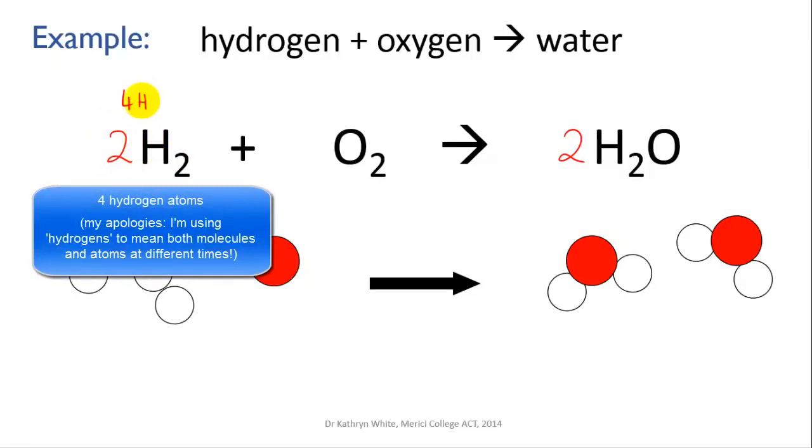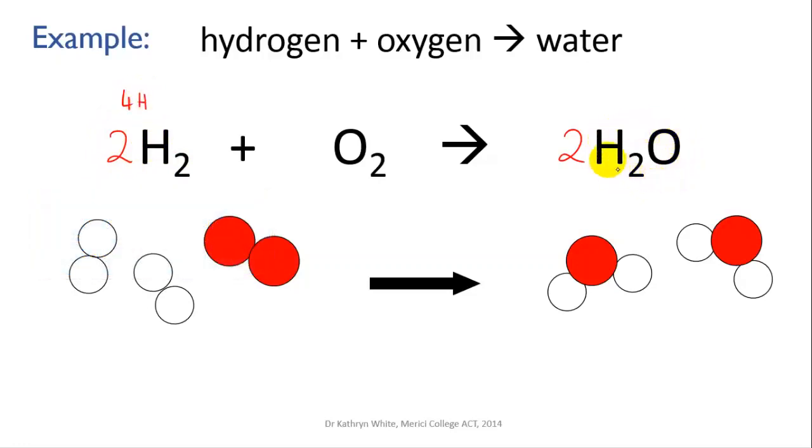And if we go over to the right, we find in a single water molecule there are two hydrogens, but we have two water molecules. So again, it's two times two, which is four hydrogens. So four on the left, four on the right, and we're balanced.